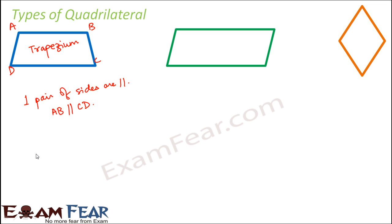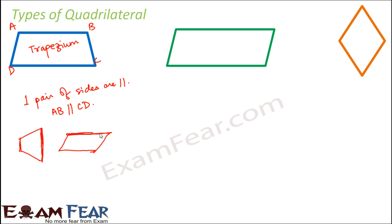A trapezium can look in many different shapes. In this diagram, naming it ABCD, we see that AB is parallel to CD. At least one pair of opposite sides needs to be parallel — that is the most important characteristic of a trapezium. It is not necessary that only one pair has to be parallel; at least one pair of sides should be parallel, and obviously those sides are the opposite sides.